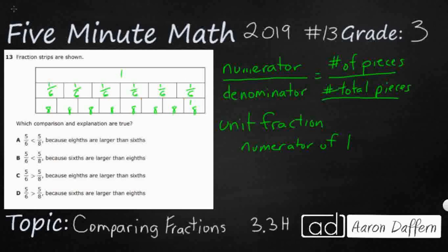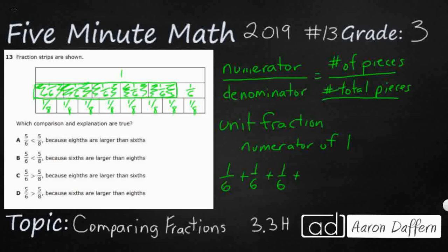Let's make these unit fractions 1/8 and label them. Now, looking at our answer selections, we have 5/6 and 5/8. Let's shade in 5 sixths: 1, 2, 3, 4, 5. That's my 5 sixths. When you add fractions — this doesn't really happen until 4th grade, but as a sneak preview — you only add the numerators: 1, 2, 3, 4, 5. The denominator stays the same because you're not making it any bigger. So we've got 5/6.